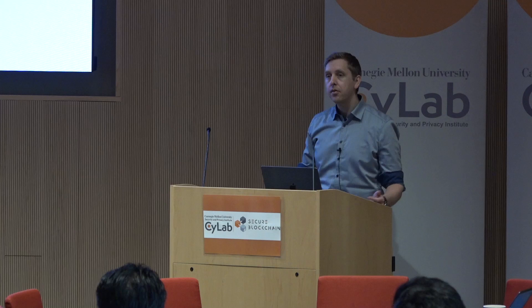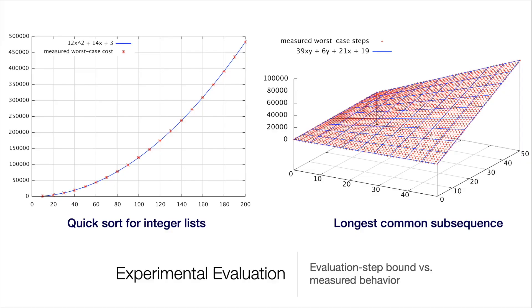The soundness only guarantees a sound worst-case bound, but doesn't guarantee anything about the quality of the bounds — that you figure out with experiments. Often if the analysis can derive a bound, it's also pretty good. On the left, quick sort for integer lists: the blue line is the derived bound and the red dots are the costs for manually identified worst-case inputs — a tight bound. On the right, longest common subsequence — also a pretty good bound, though not tight.